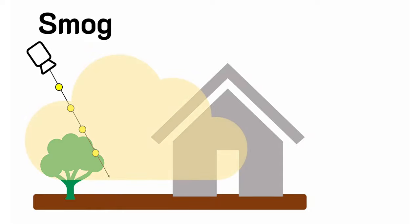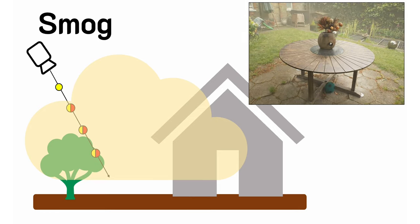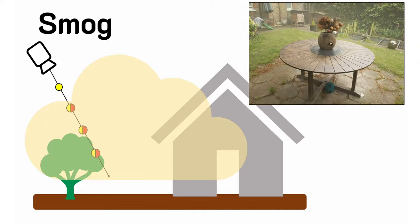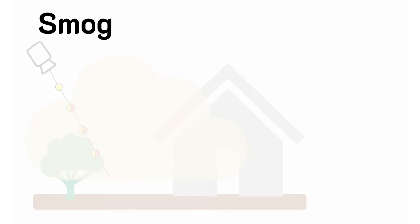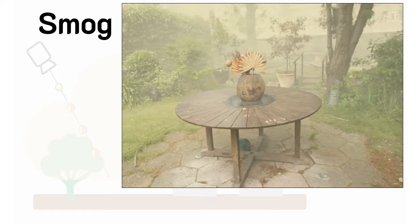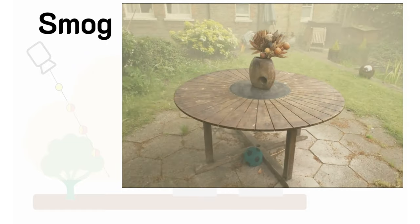Smog is formed by tiny absorbing particles uniformly distributed in space. This means we can model smog density in free space by adding a non-negative constant to the density. Changing our values enables us to visualize different levels of smog densities. As we simulate the smog in 3D space, the resulting renderings are view-consistent and physically plausible.